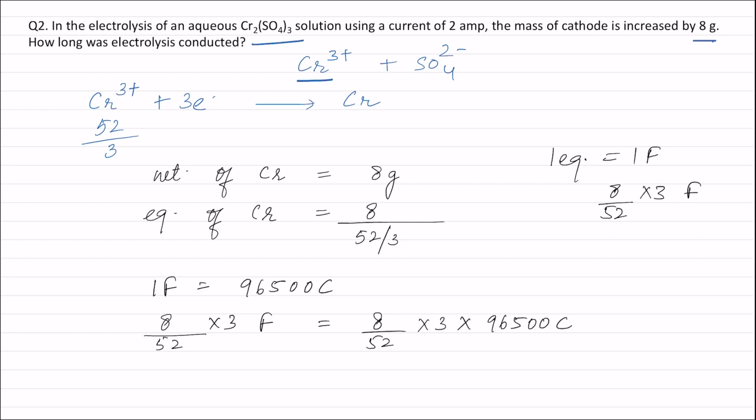Now applying the formula Q equals IT. We know the value of Q. The value of I is given in the question as 2 amperes. From this, the value of time will be equal to Q divided by I.